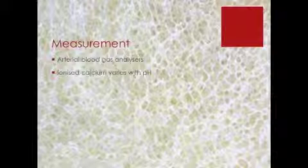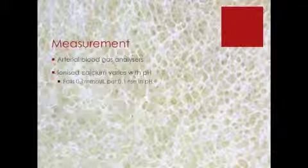Ionized calcium levels can be corrected for pH by adding 0.1 millimoles per liter for every 0.1 increase in the serum pH.